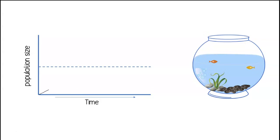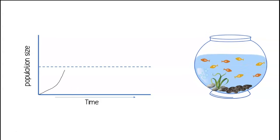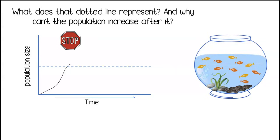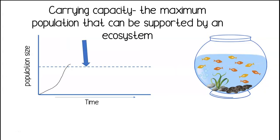Let's look at the growth of the fish population once again on this graph here. What does that dotted line represent and why can't the population increase after it? The dotted line represents the carrying capacity of the fishbowl ecosystem. The carrying capacity is the maximum population that can be supported by an ecosystem.